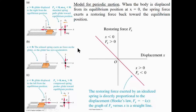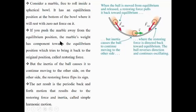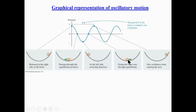The restoring force is responsible for the oscillation. Another example: a marble in a bowl. The equilibrium position is where the net force is zero. If you push the marble slightly from equilibrium and release it, the gravity component acts as a restoring force, pulling it back. Due to inertia, it overshoots, the gravity component flips direction, and it oscillates again. Plotting position as a function of time gives a wave-like shape — this is the graphical representation of oscillatory motion.